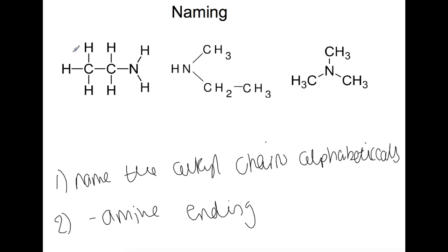Here we have a primary amine and the chain that is attached has two carbons in it, so we would call this ethyl amine. For this one here we've got a chain with one, so that will be a methyl, and a chain with two, so that will be an ethyl. We need to put them alphabetically, so this is ethyl methyl amine.